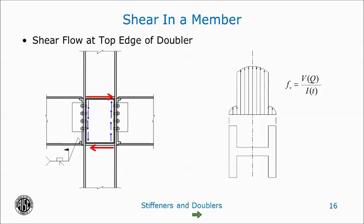The same thing happens at beam-to-column flange moment connections where the beam flange applies a point load to the column. You see that same increase in shear stress at the junction of the column flange and column web. And it is for this reason that if doublers are required at beam-to-column flange moment connections, they are either groove-welded into the column radius or welded to the column flange.